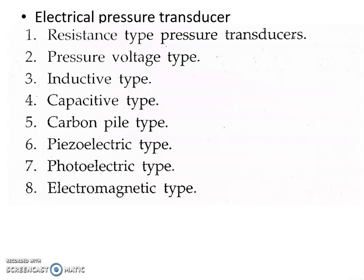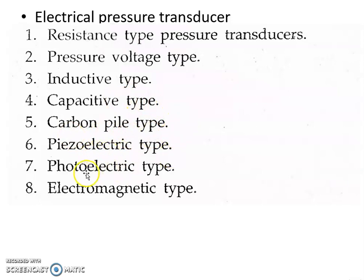There are different types of electrical pressure transducers: resistance type pressure transducers, pressure voltage type, inductive type, capacitive type, carbon pile type, piezoelectric type, photoelectric type, and electromagnetic type. These are the different types of electrical pressure transducers which we are going to study in the subsequent chapters.